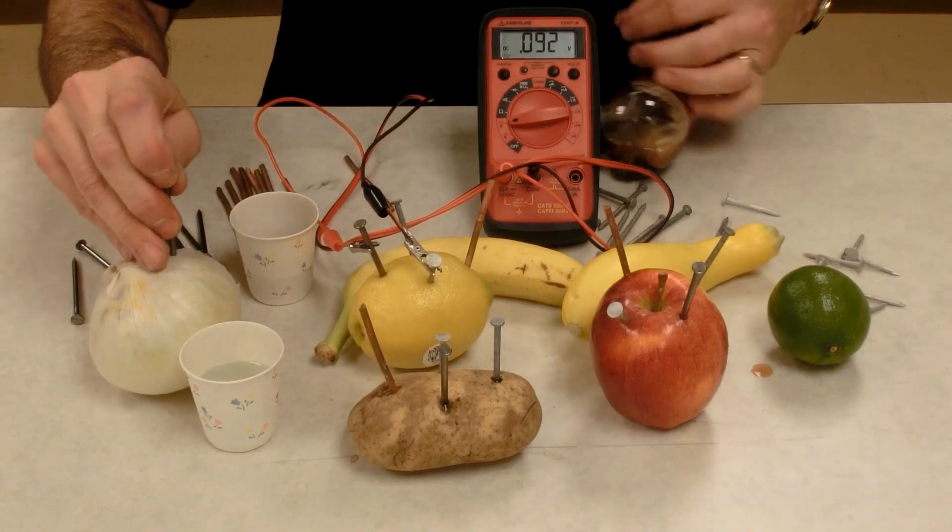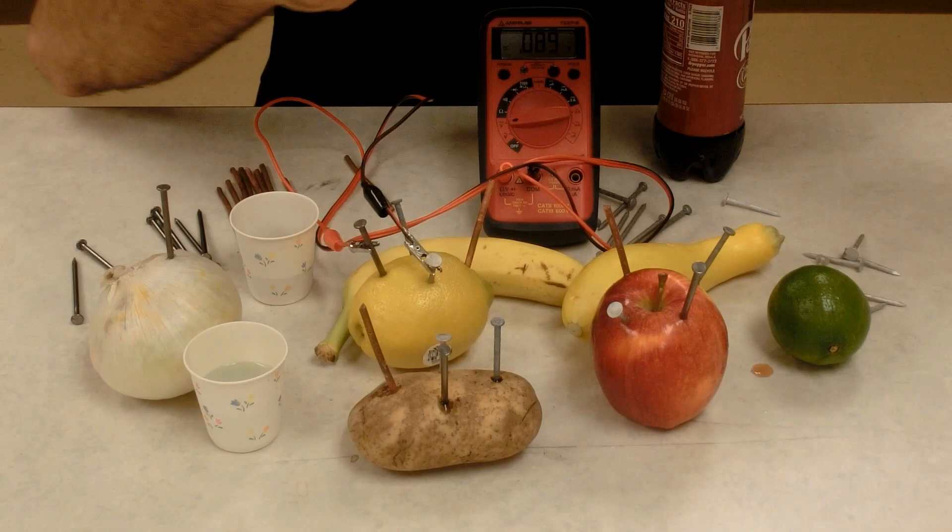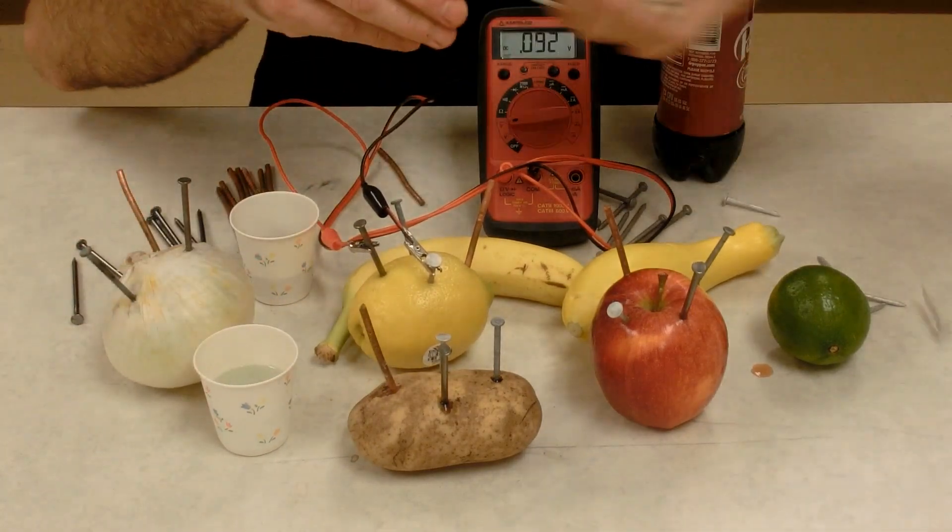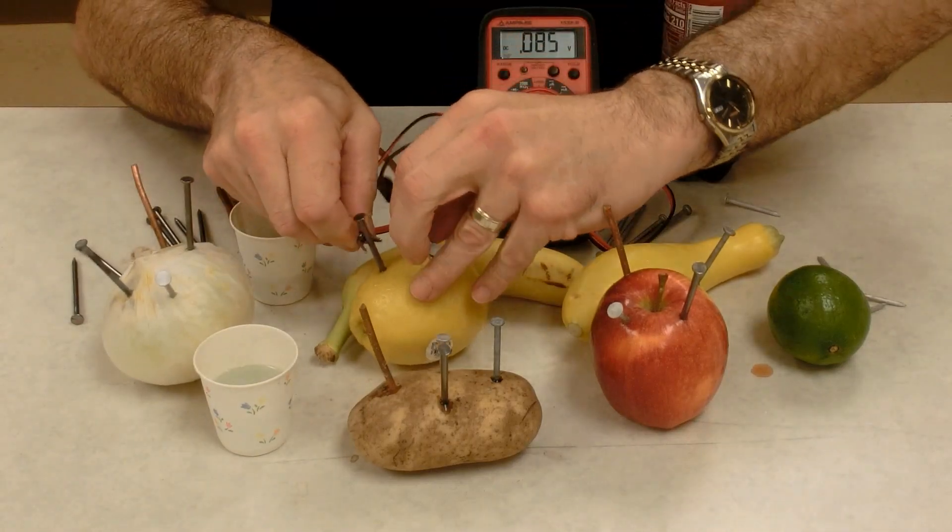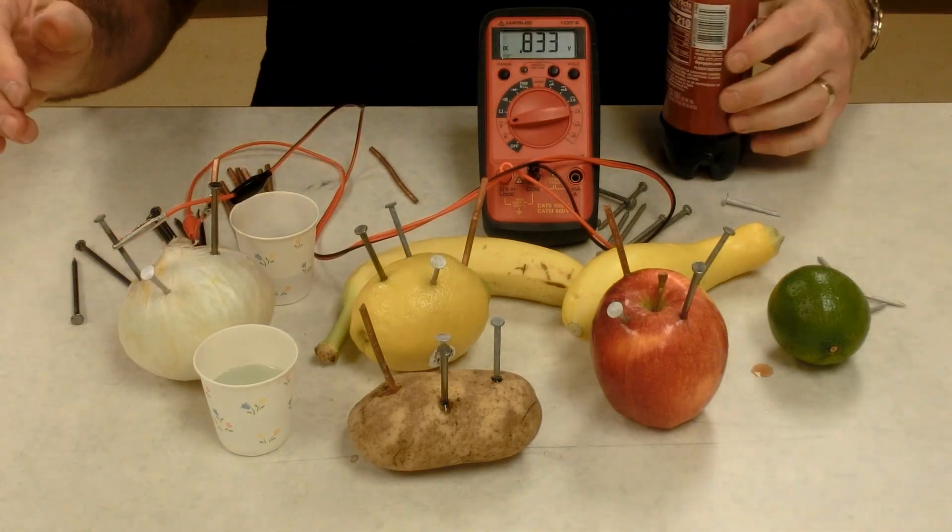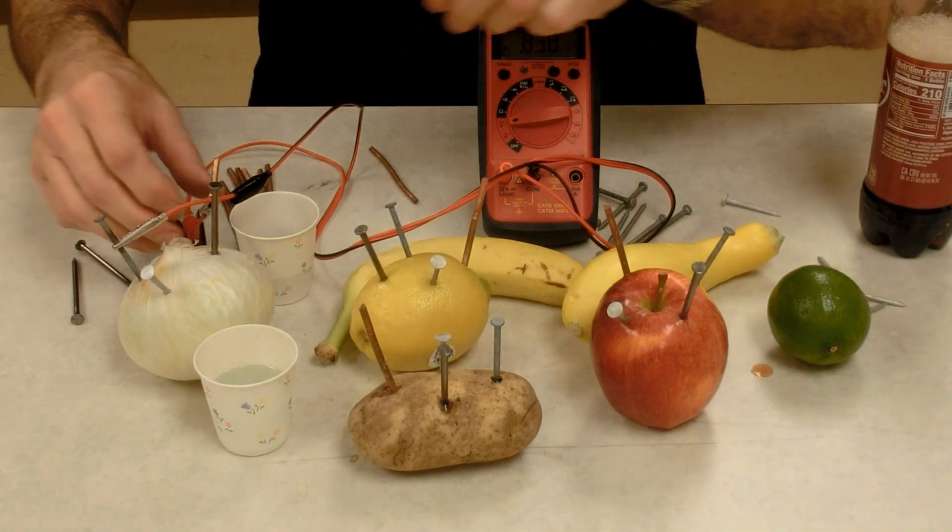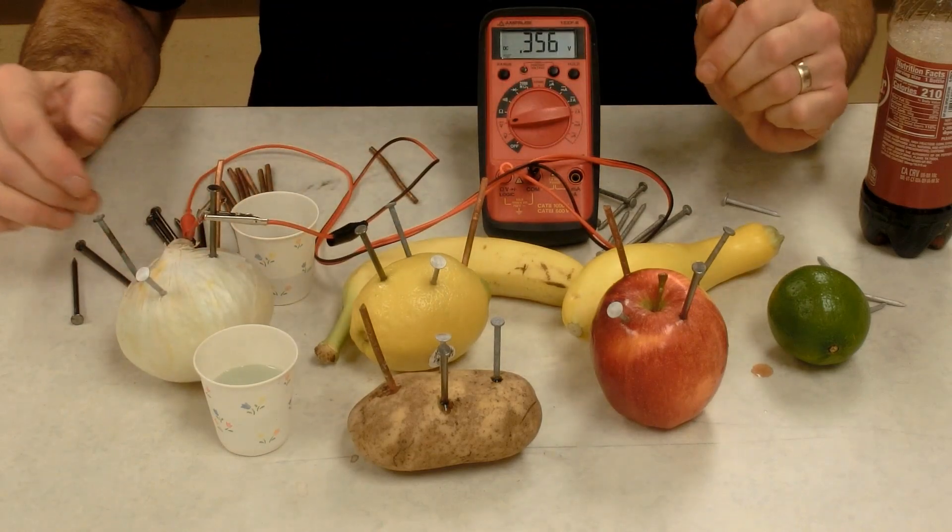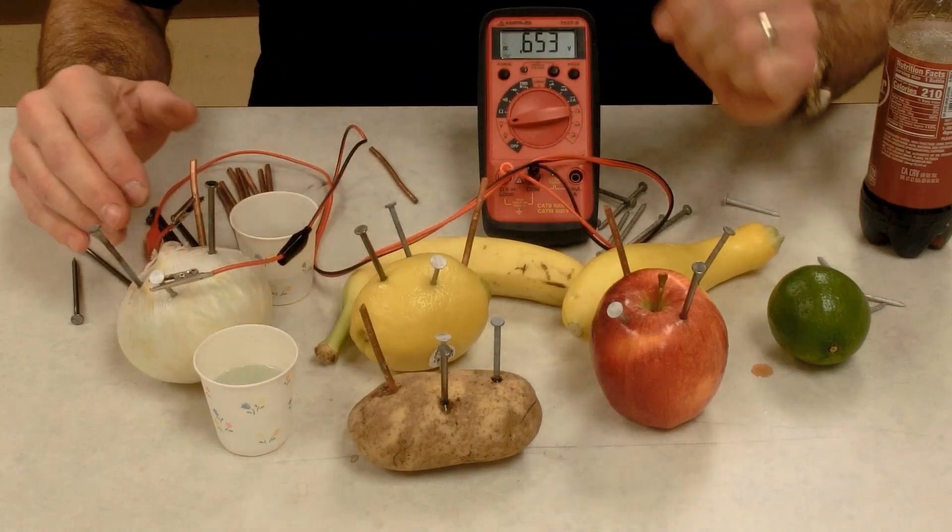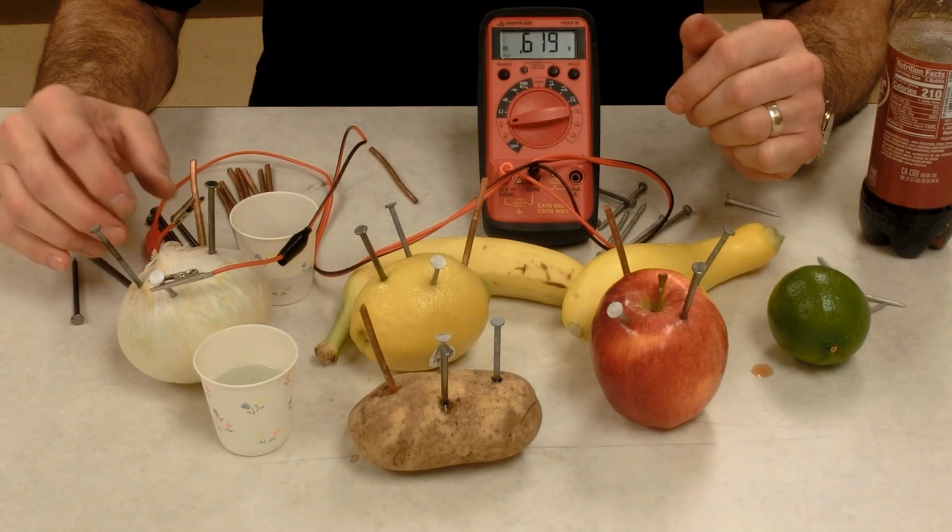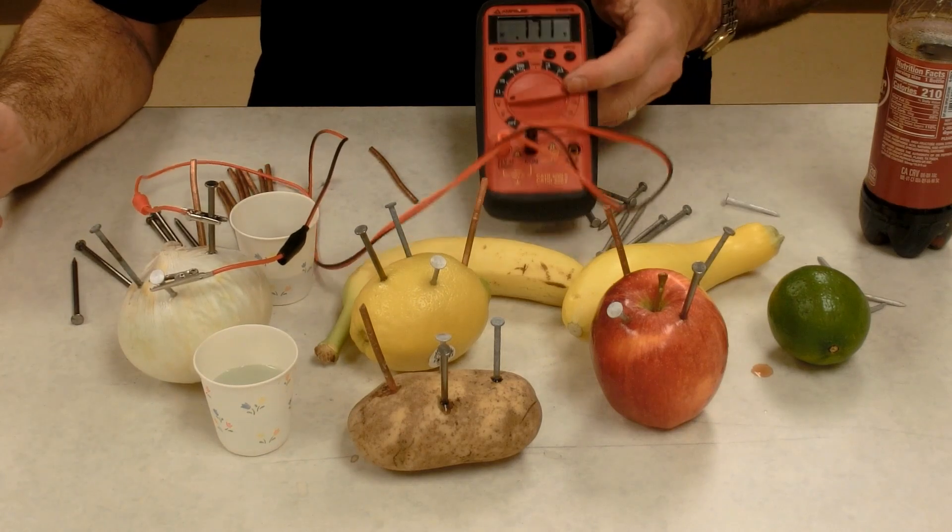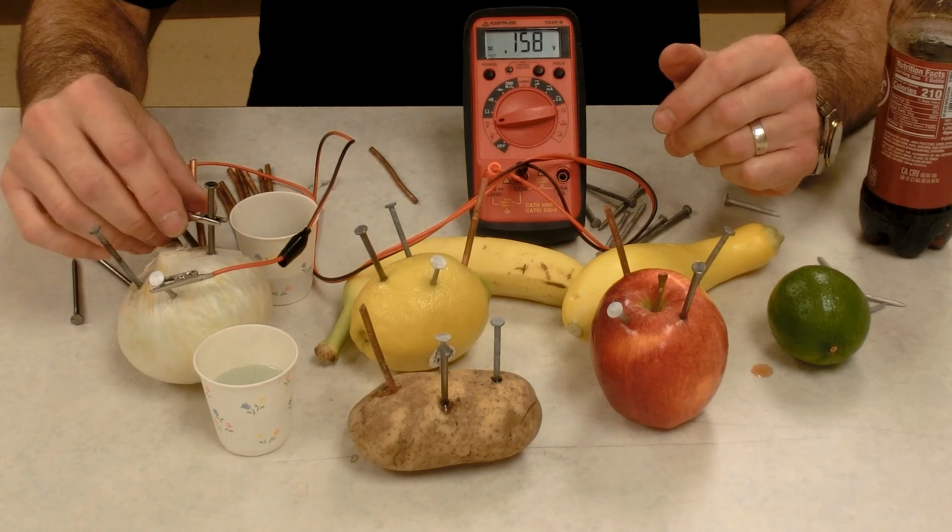Let's try the onion. There's my steel, zinc, copper, and aluminum. So the copper and the zinc, 0.83 volts. Copper and steel, 0.37 volts. Copper and aluminum, 0.6 volts. Aluminum and steel, 0.17 volts. Smallest voltage again.